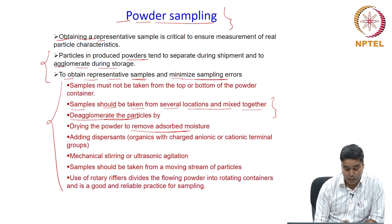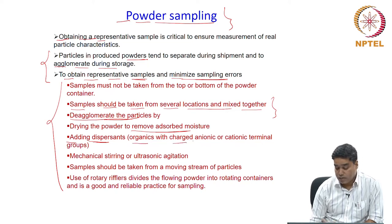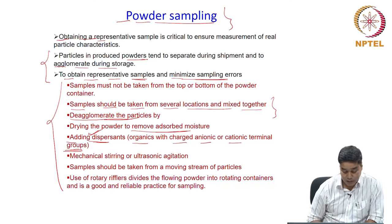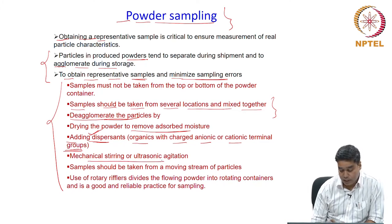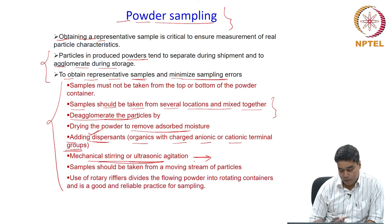In order to avoid agglomeration or sticking of powder particles with each other, organics with charged anionic or cationic terminal groups can be used as dispersants. A dispersant is an organic material which will modify the surface of the particles and prevent their sticking together or agglomeration. Mechanical stirring and ultrasonic agitation can also be utilized to randomly mix the powder and remove any agglomeration or separation that might have occurred during transportation and storage.